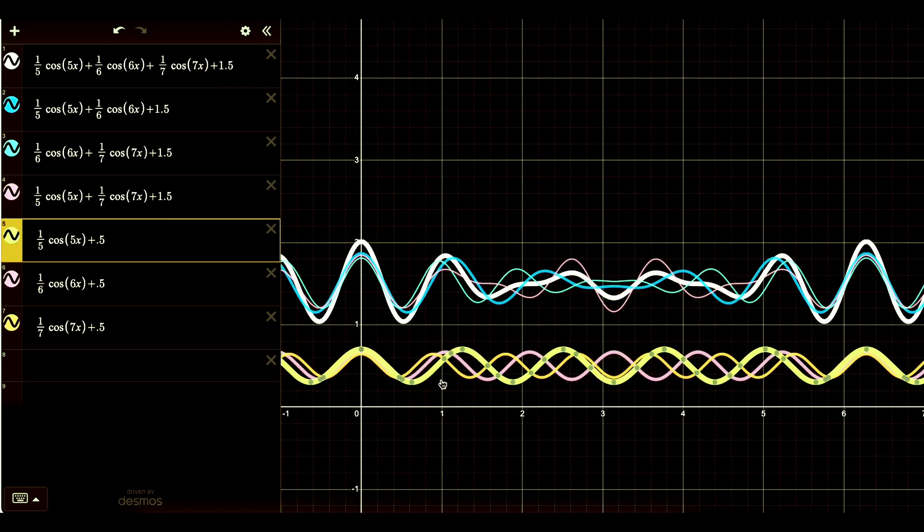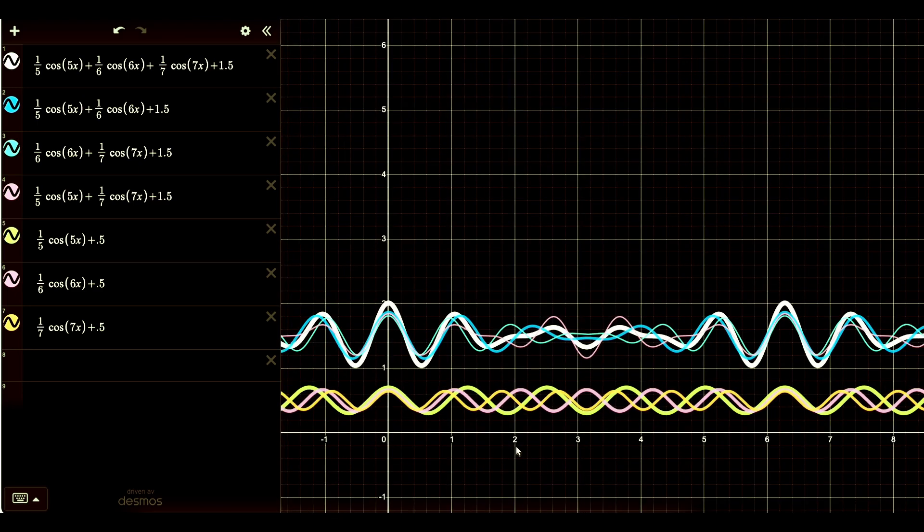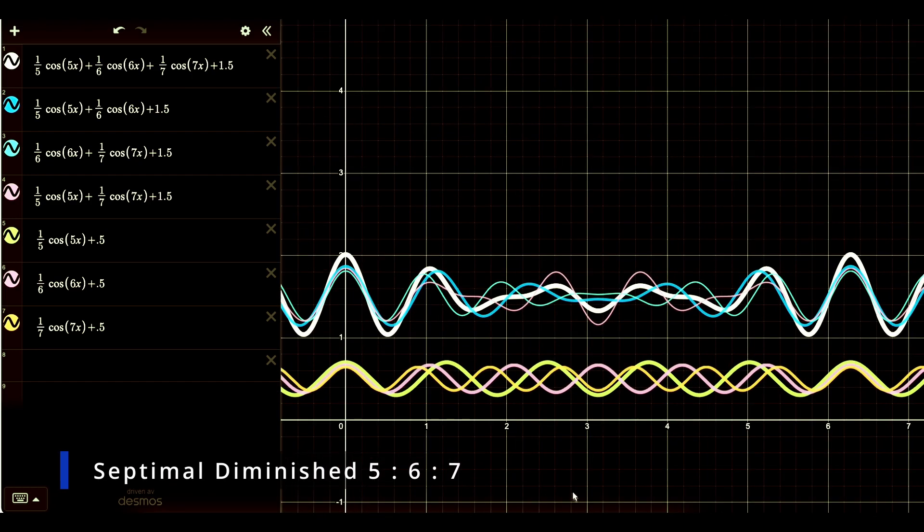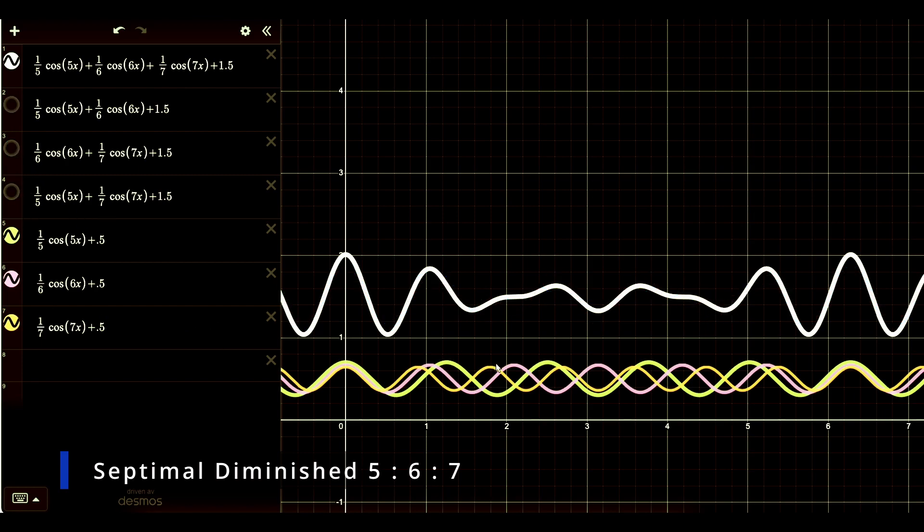Next, we have the lovely diminished chord of the fifth, sixth and seventh harmonics. Again, let's look at it component by component. Here's the Fourier transform of the three notes.